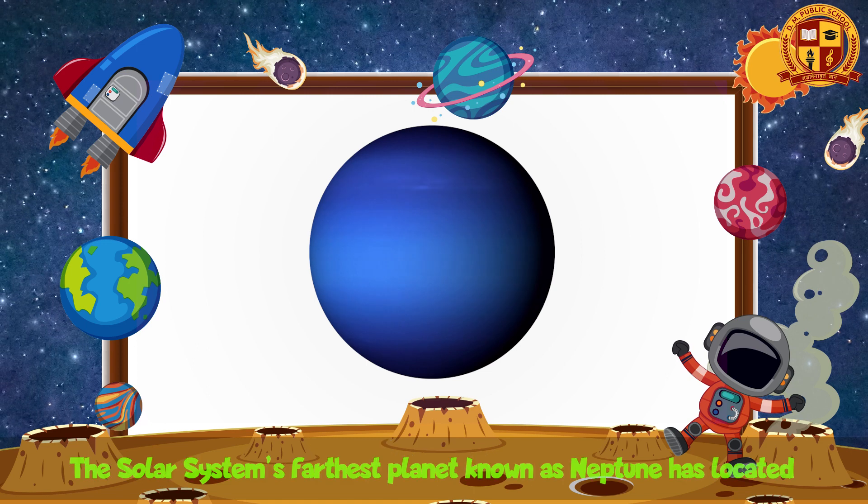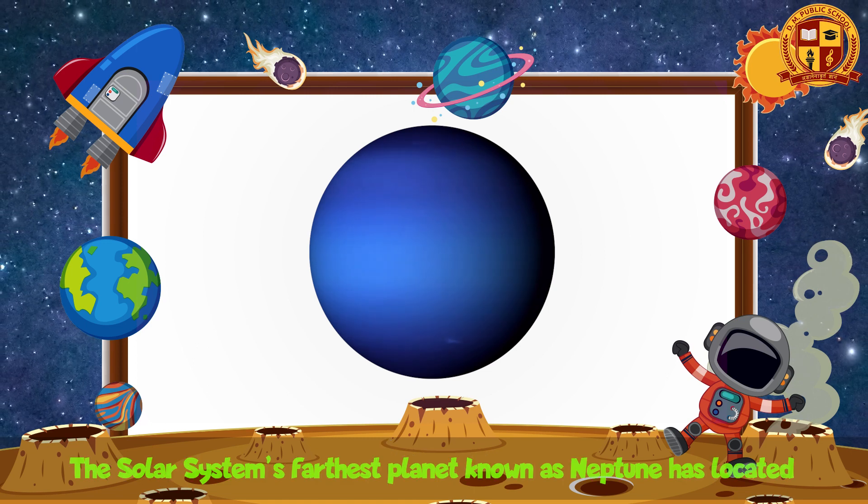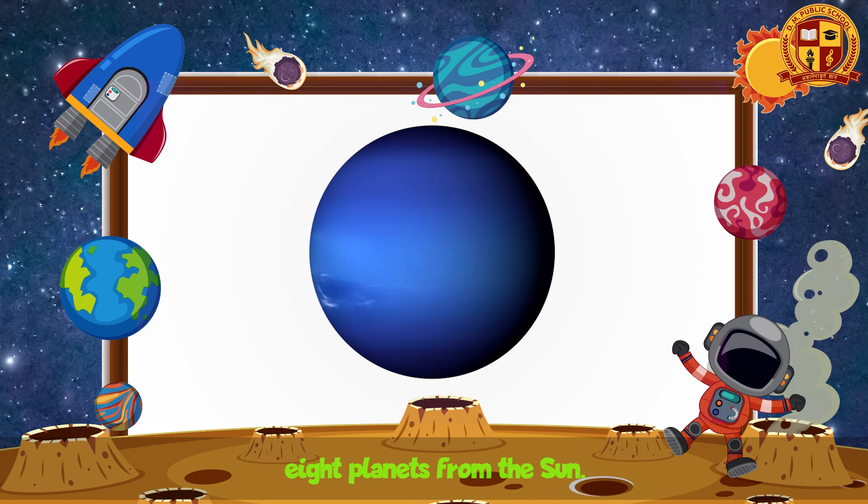Neptune, the solar system's farthest planet, is located eight planets from the sun.